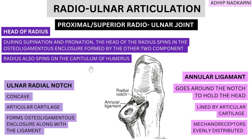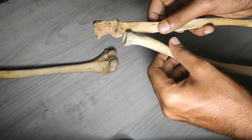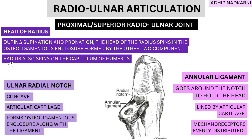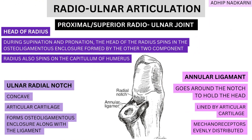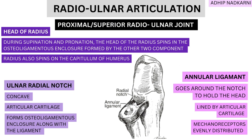The third component is the radial head. During supination and pronation, the head of the radius spins inside this osteoligamentous enclosure formed by the annular ligament and the ulnar radial notch. The radius also spins over the capitulum of the humerus. So the movement at the proximal radio-ulnar joint — supination and pronation — involves the radius moving inside the osteoligamentous enclosure formed by the ulna and the annular ligament.